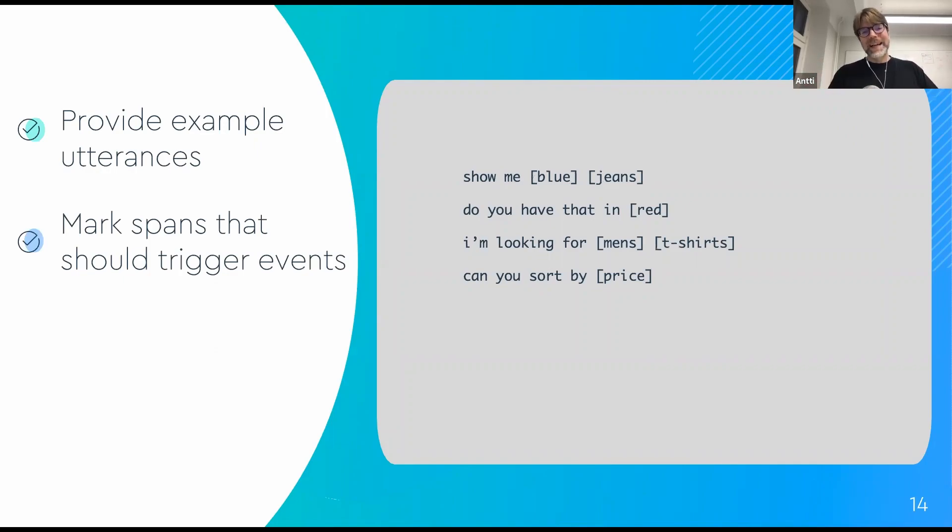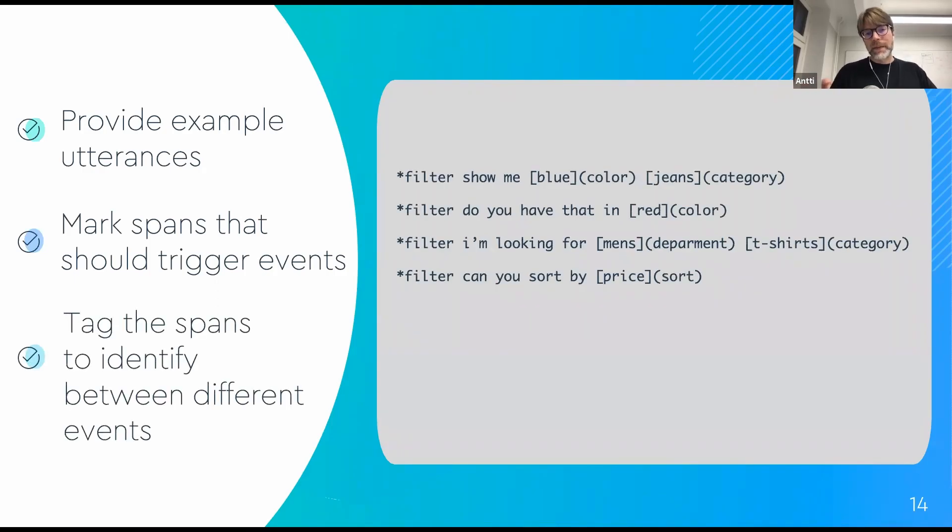Finally, you annotate these spans so that our machine learning system can distinguish between different phrases of interest and generate different events. Here you can see that the word blue has been tagged as color and jeans has been tagged as a category.